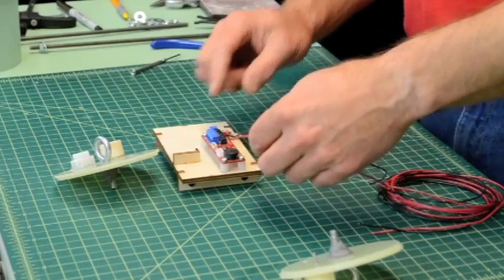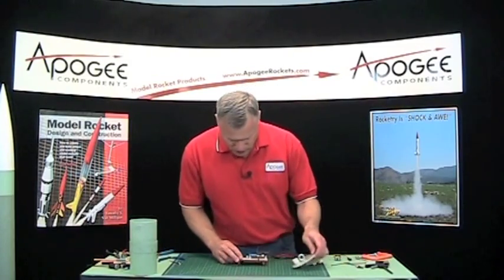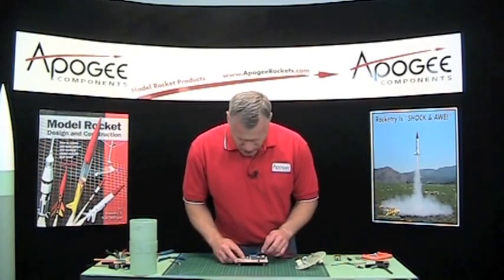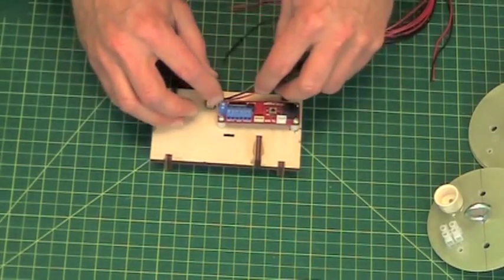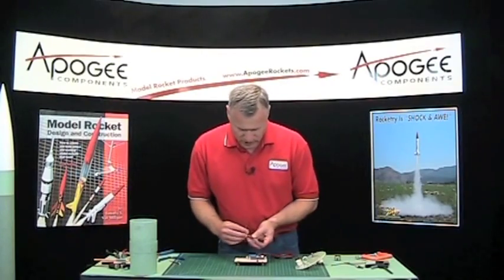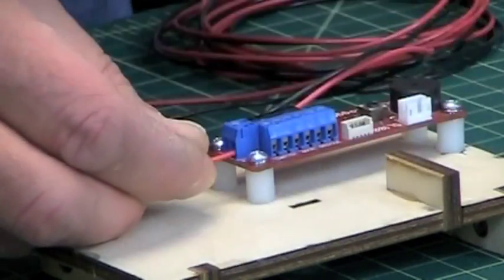So next it's time to start wiring things up. You have to look at your altimeter and see where the switch wires are going to go and the battery terminals. The battery terminals on this one are right here, so I'll go ahead and stick those in.